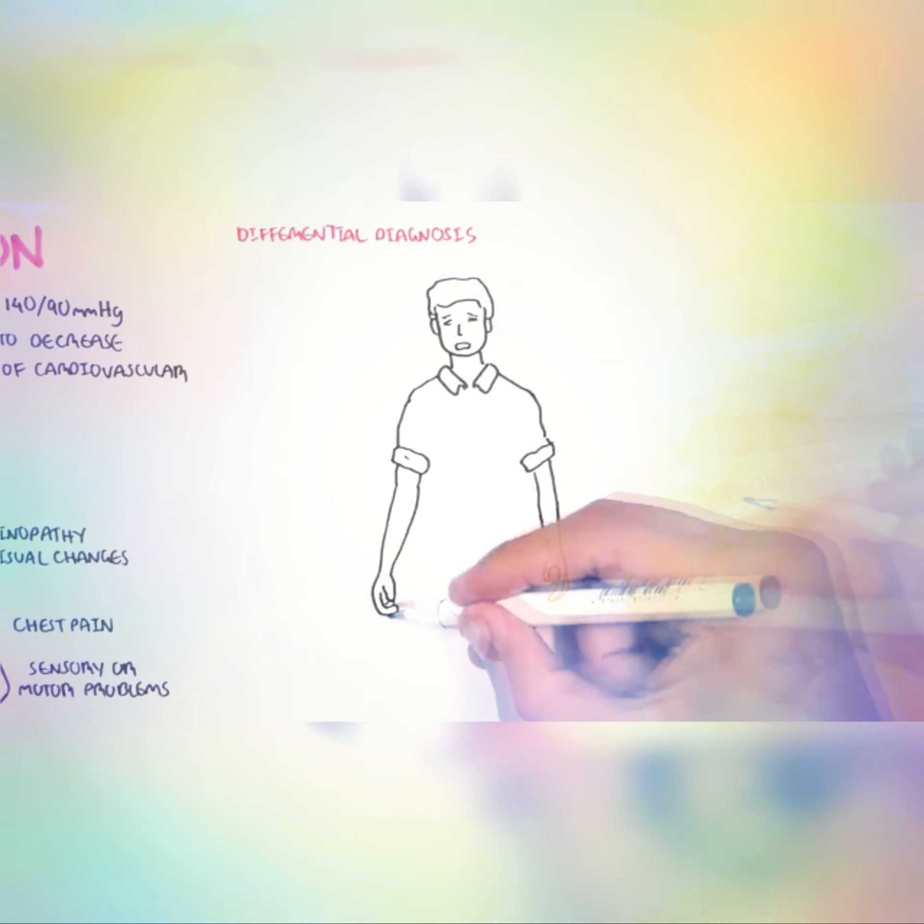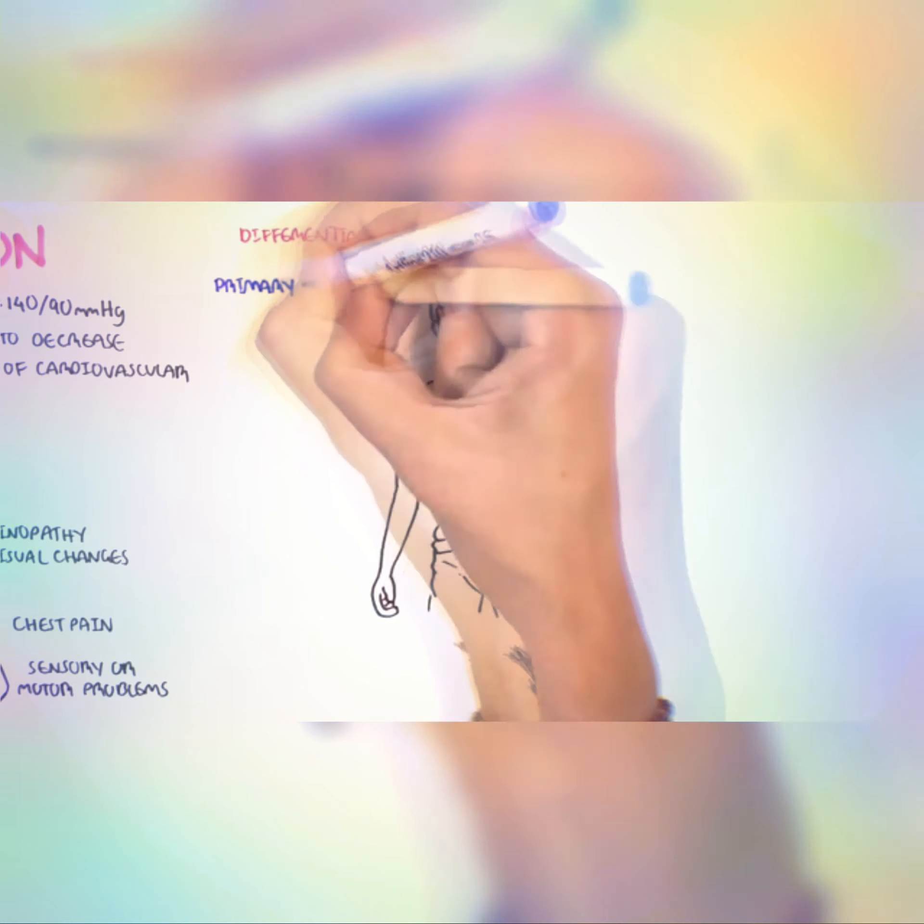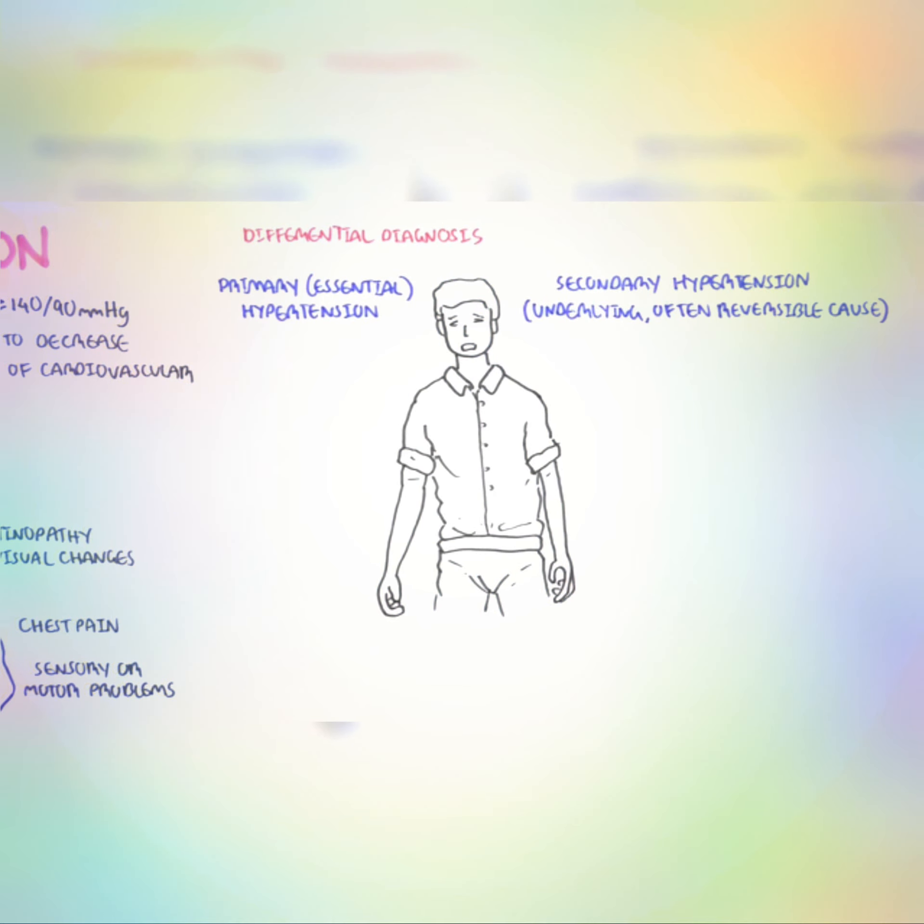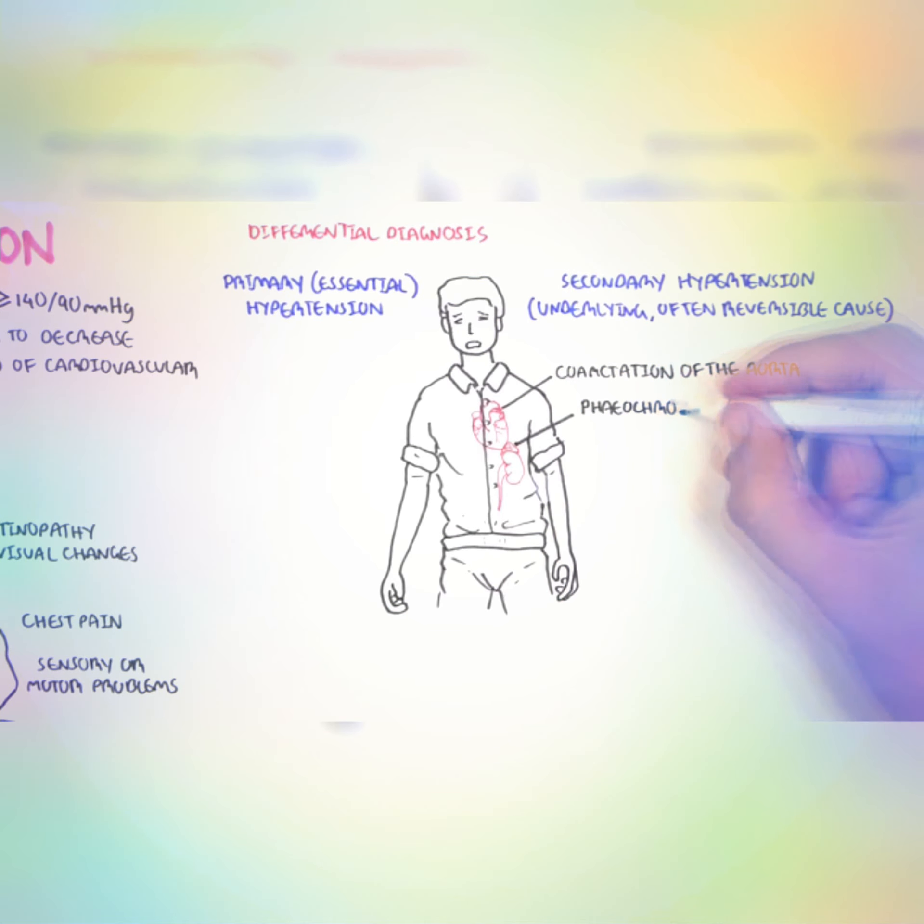Hypertension can be a disease in itself, or it can be secondary to another condition, an underlying disease. Let us look at the differential diagnoses. Hypertension can be categorized as primary, also known as essential hypertension, or secondary hypertension, which is hypertension as a result of an underlying, often reversible cause. Primary hypertension is basically genetics and lifestyle.